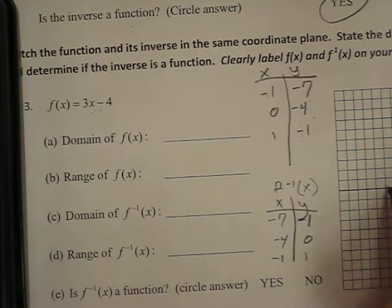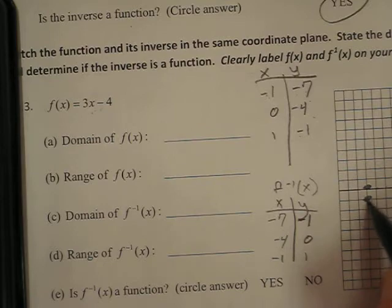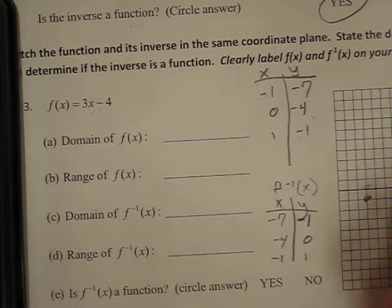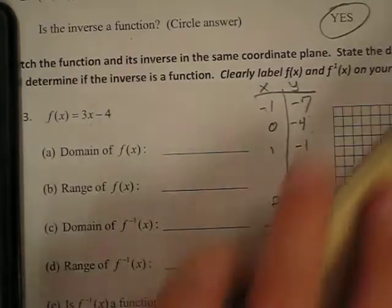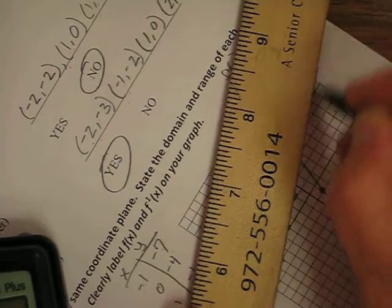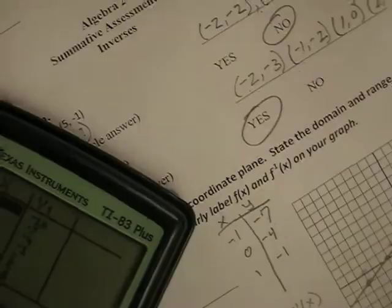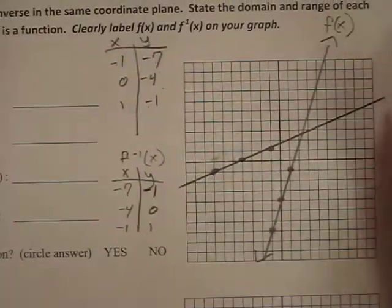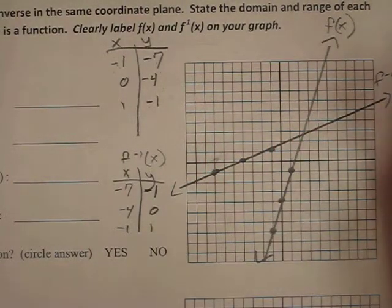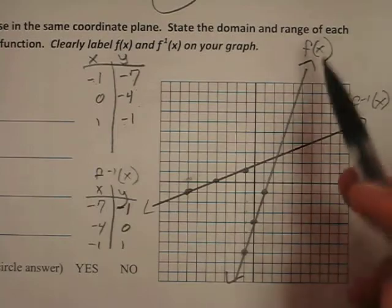So there's negative 7, negative 1. Sorry, it should be right there. Negative 4, 0 goes right there. And negative 1, 1 goes right in that spot. Then you use your ruler and draw straight through. Make sure you put arrows and label this as f⁻¹(x). That's my final answer, make sure it's labeled.